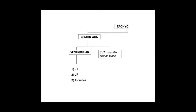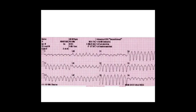Ventricular tachycardias can be broken down into VT — ventricular tachycardia — or VF — ventricular fibrillation — and torsades de pointes, which can occur as a result of long QT syndrome and describes a pattern of alternating amplitude in the QRS complexes. Here is an example of a ventricular tachycardia where you can see the rate is increased and the QRS complexes are wide and regular — a good example of a ventricular tachycardia.